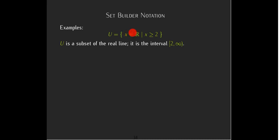So u actually is a subset of the real line. It's an interval starting at positive 2 and going to infinity.